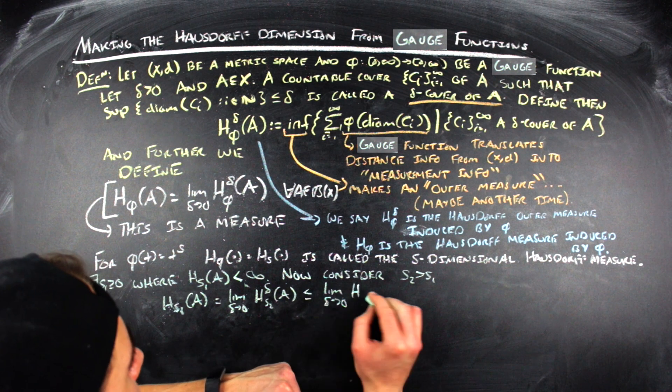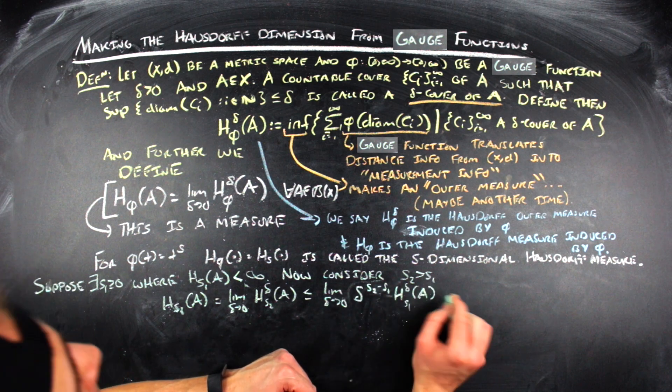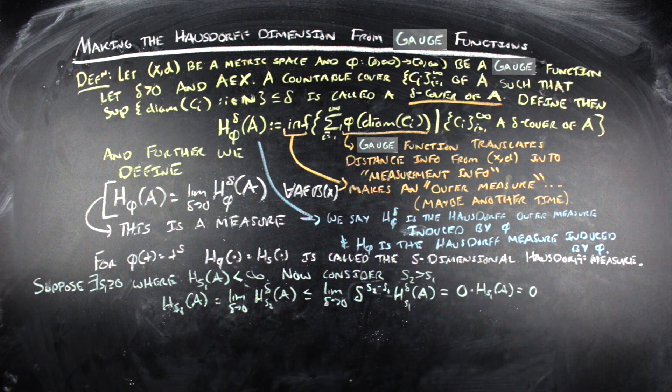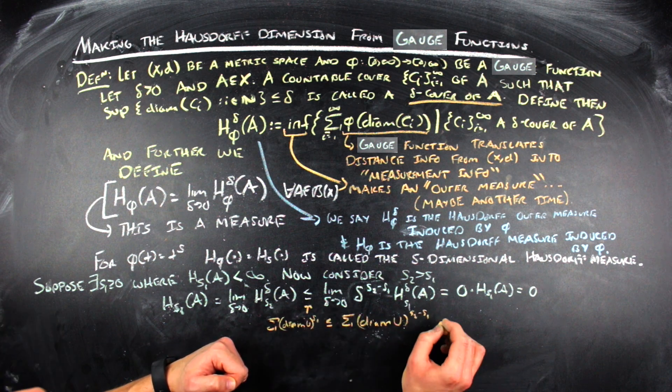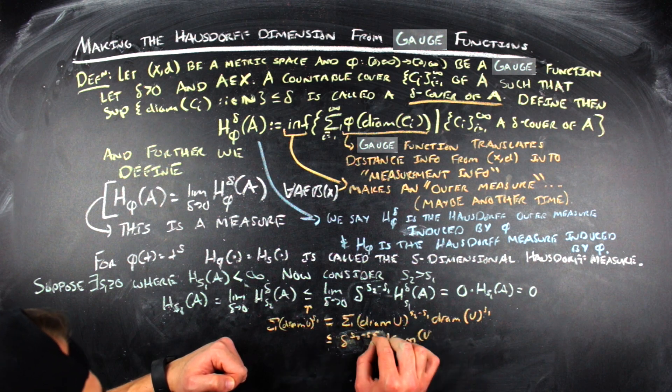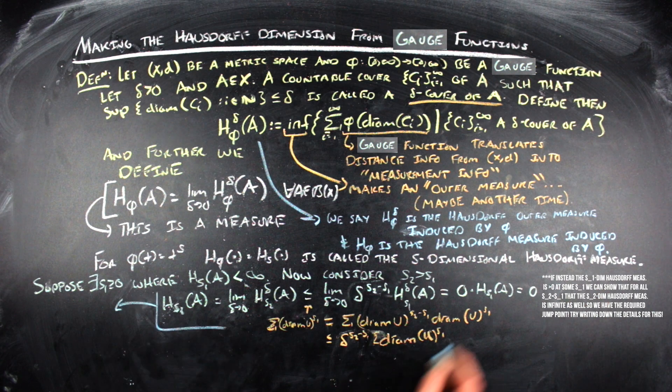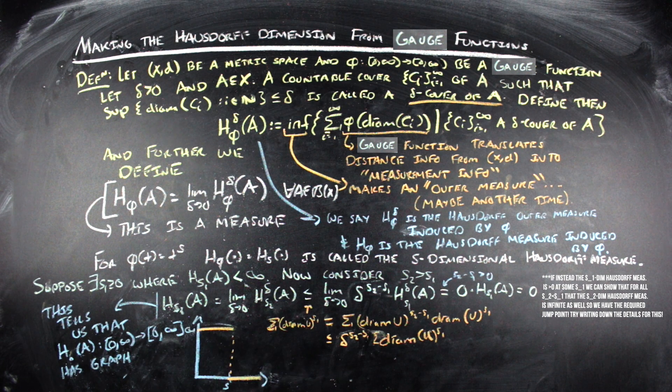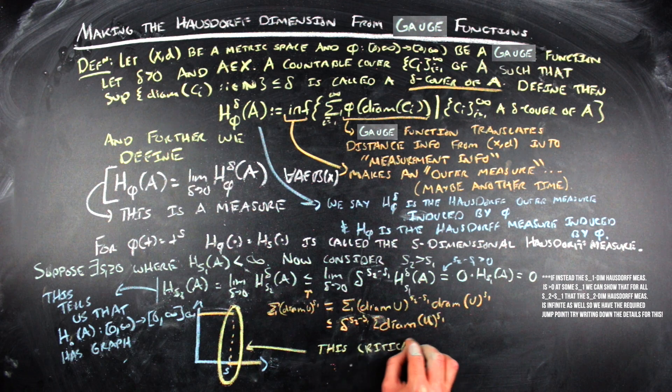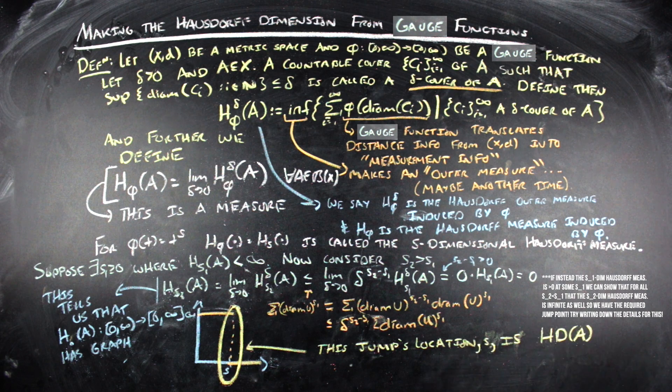And to do that, we just need to do a little bit of analysis. In that analysis, we want to show that the graph behavior that we had before happens. That is, you'll have something that starts out at infinity, and then once it hits the parameter that we call the dimension, it bounces to zero, and then after that parameter it's always zero. So to see this, we can go ahead and just look at a particular case. Suppose there is a parameter s₁ for which the s₁-dimensional Hausdorff measure of A is less than infinity. So now we consider some s₂ that's greater than s₁. Then the s₂-dimensional Hausdorff measure of A is going to be equal to that limit as δ→0 of h_{s₂}^δ(A). That's less than or equal to the limit as δ→0 of δ^{s₂-s₁} times h_{s₁}^δ(A).